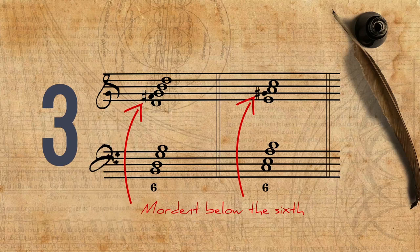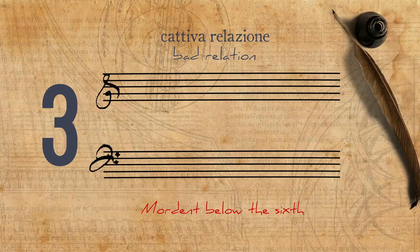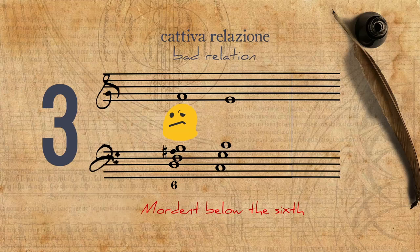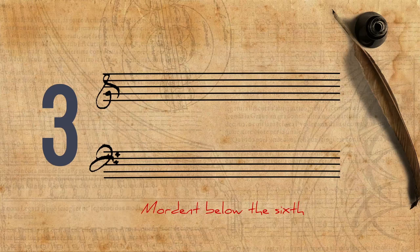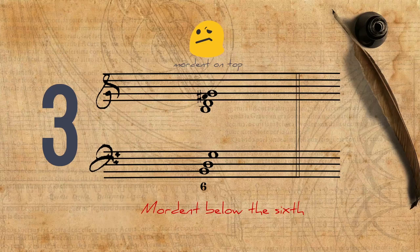He warns the reader, however, that the mordent on the sixth might create cativa relazione, bad relation. Like in the case of a penultima chord of a tenor cadence. In terms of positions he doesn't say anything, but none of the examples he gives have the mordent on the top note. So this might be wrong according to him.